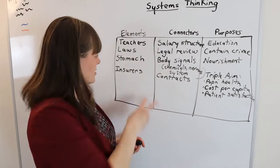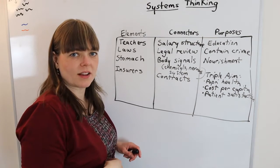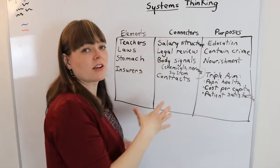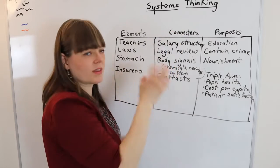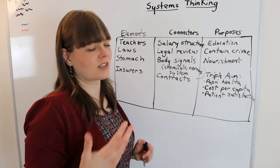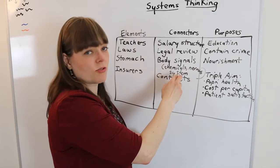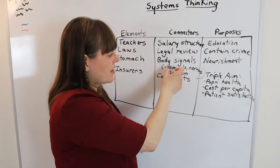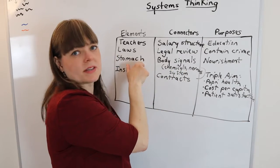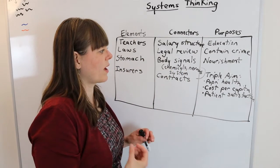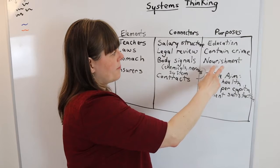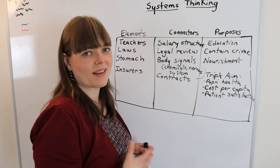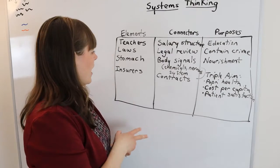The digestive system, we might have the stomach as one element, the large intestine, small intestine. Body signals might be a connector between the different systems. Is your stomach upset? Body signals can be driven by chemicals and by the nervous system. And chemicals actually could be an element as well as a connector in some ways. The purpose of that system might be nourishing your body, keeping you alive.